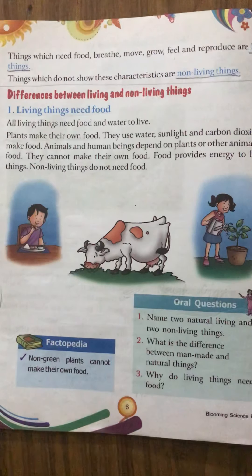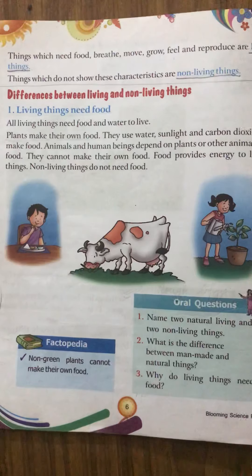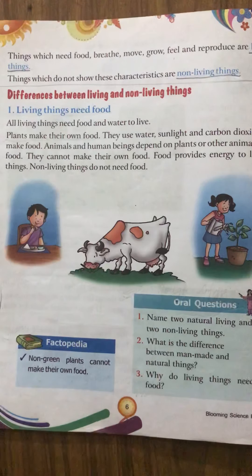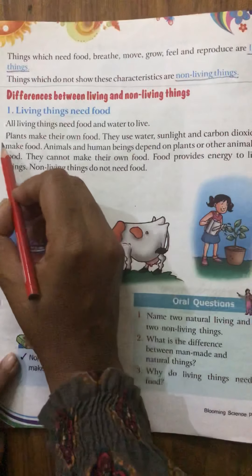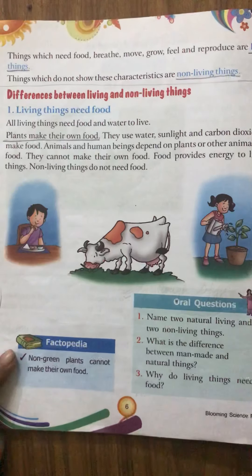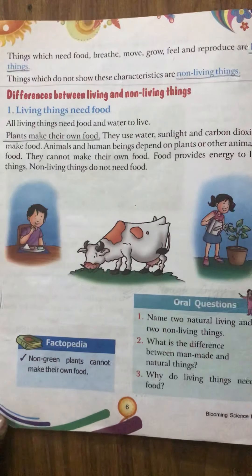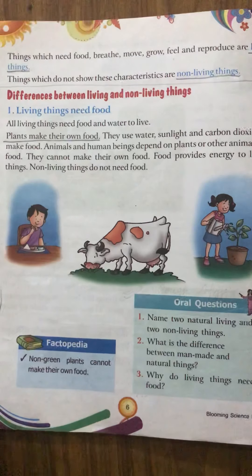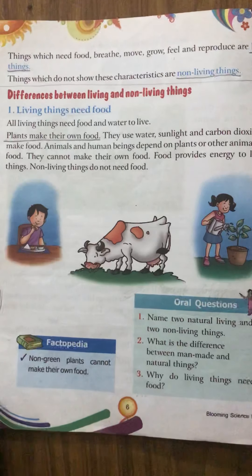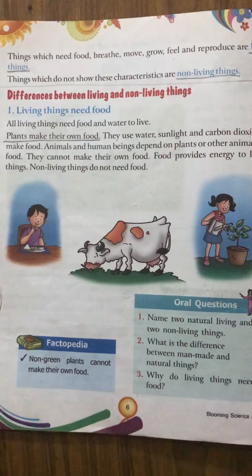We don't make food ourselves — we use things we get from plants. Animals and human beings depend on plants, or on other animals, for food. Whatever things we get from plants — rice, wheat, fruit, potato — we use those to prepare our food.